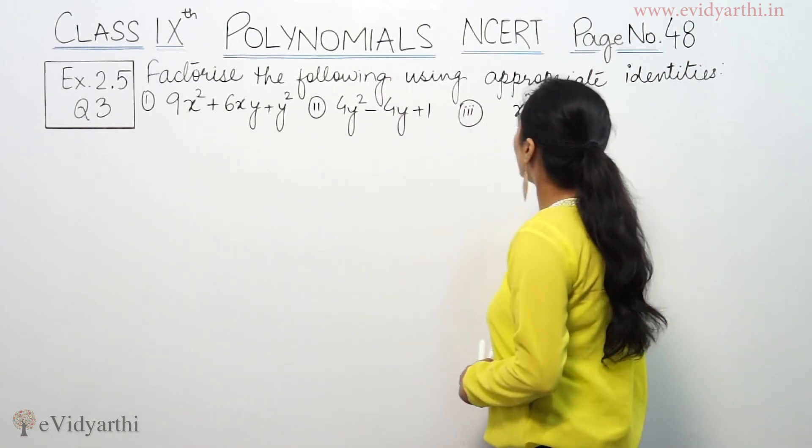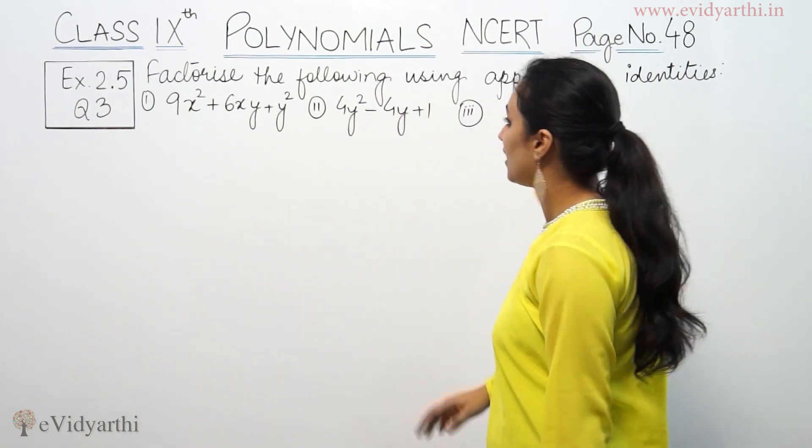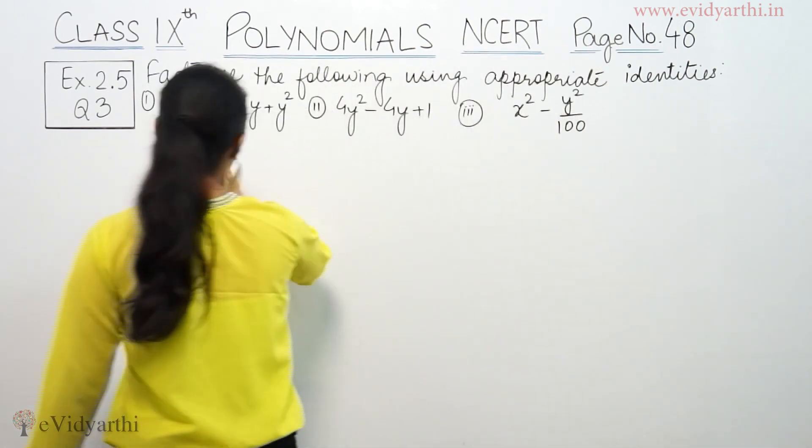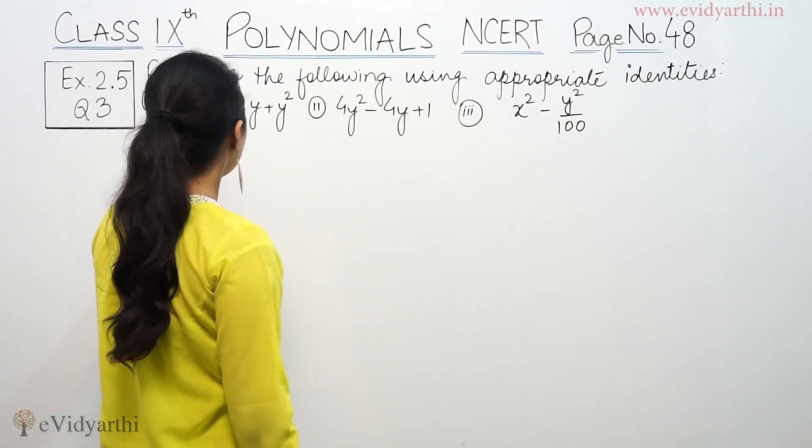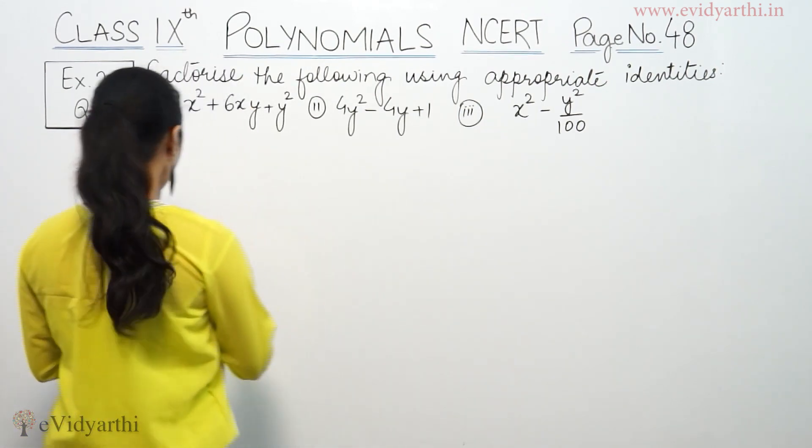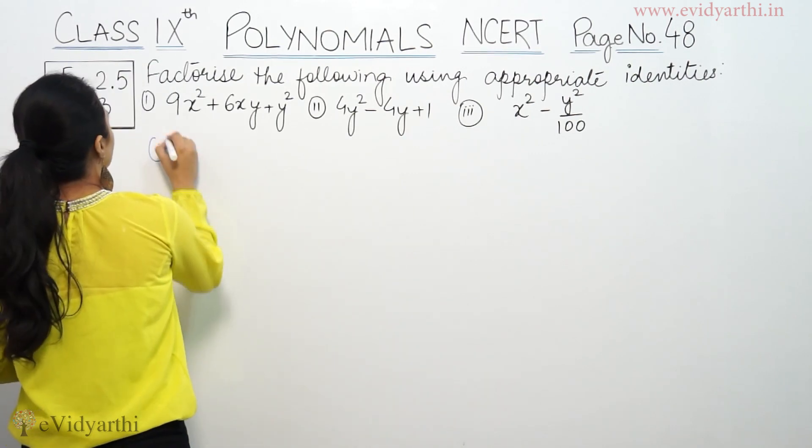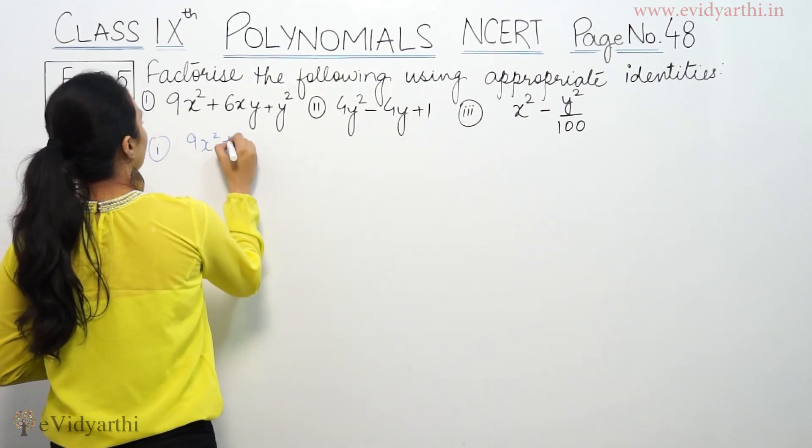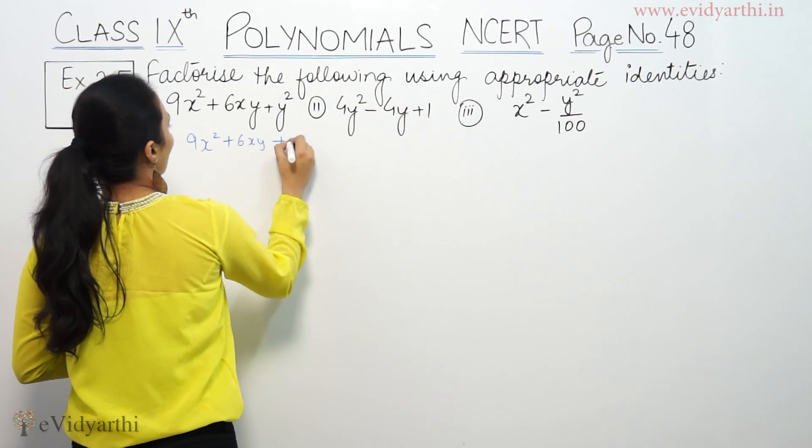This says, factorize the following using appropriate identities. We have to factorize them, which is, first is 9x² plus 6xy plus y². So, 9x² plus 6xy plus y².